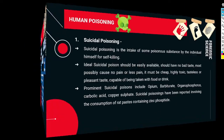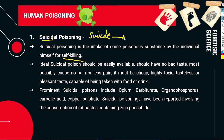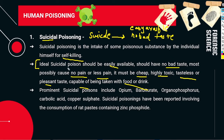Suicidal poisoning is when a person takes poison with the intent to kill himself. In suicidal poisoning, the person looks for poison that is easily available, has no bad taste, causes no or little pain, is cheap, highly toxic, and can be mixed with food or drink. Common agents used include opium, barbiturates, organophosphorus compounds, carbolic acid, copper sulfate, and rat paste containing zinc phosphide.